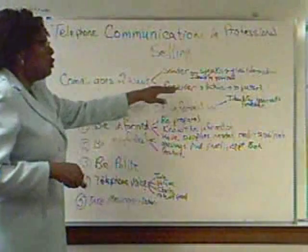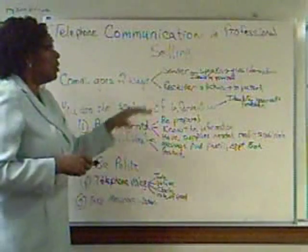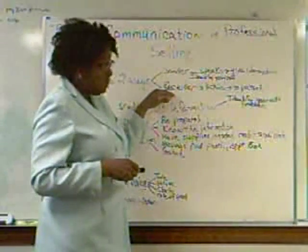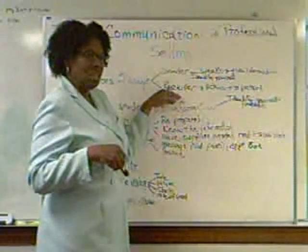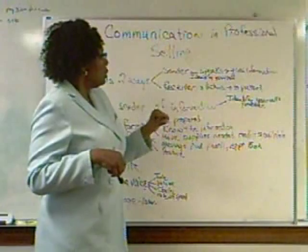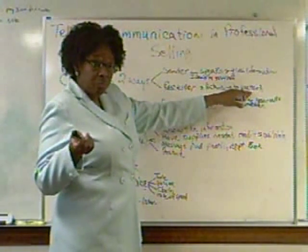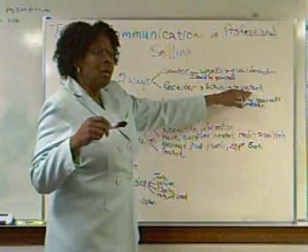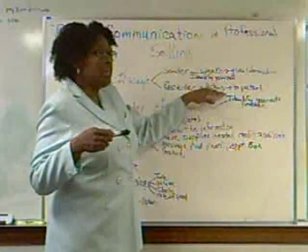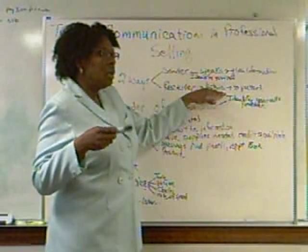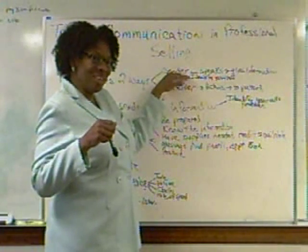Once you ask them for information, you then become the receiver. And what does the receiver have to do? The receiver has to listen — they have to listen and decode the information that the other person is giving them. So the receiver listens to the patient or the person on the other end of the phone. In listening, you have to give your undivided attention. As you listen to the patient, you're gathering the information they want to get from you, and then you become the sender again.